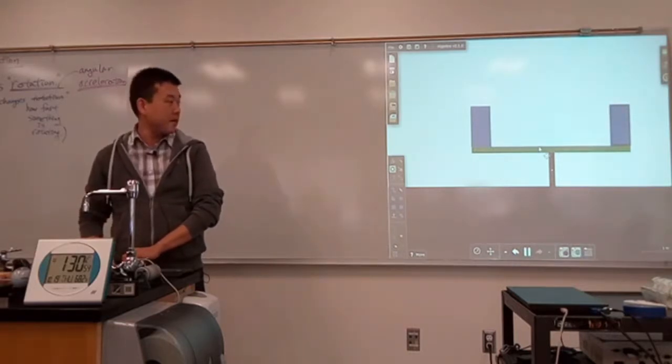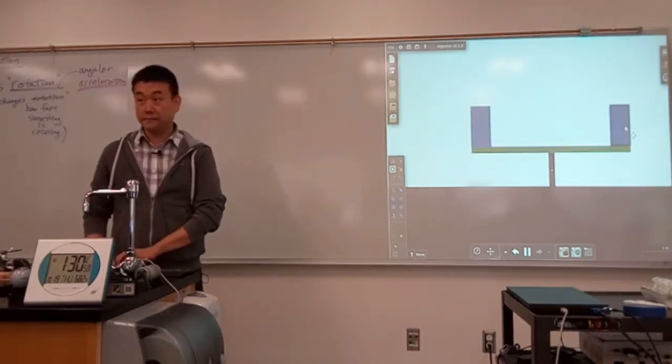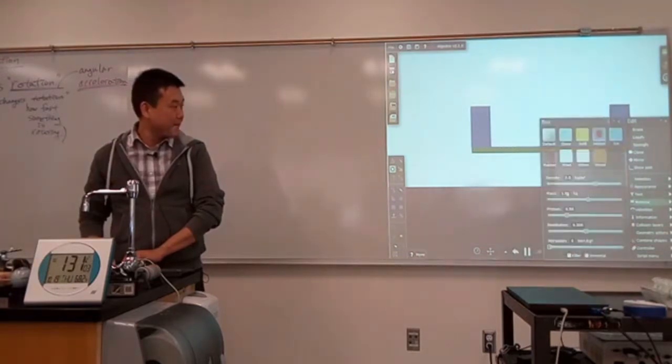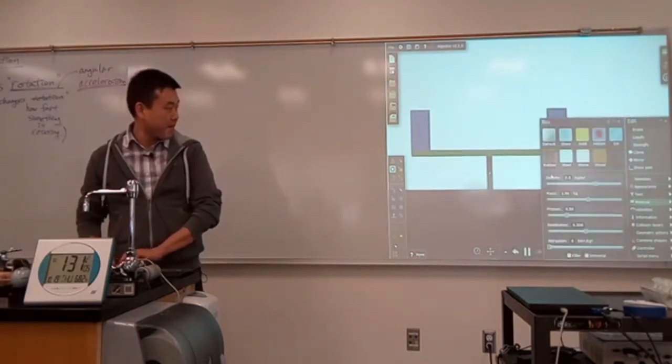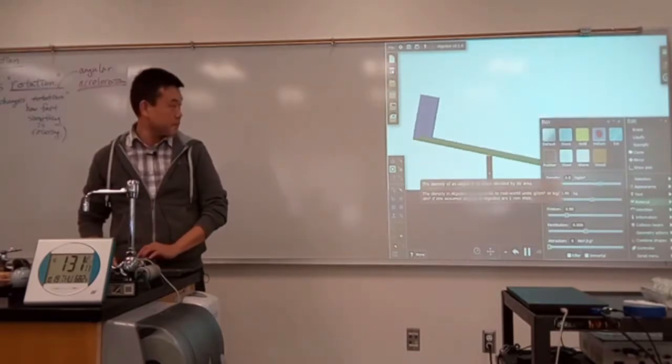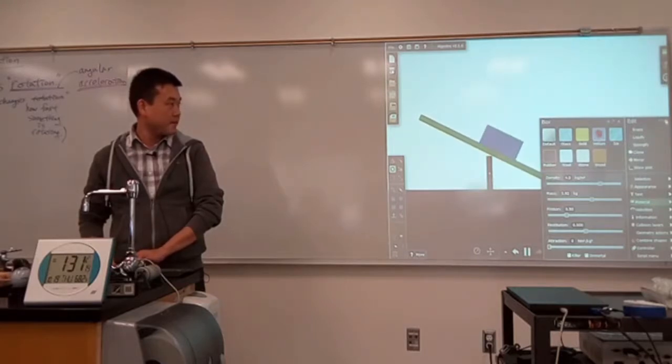Now imagine that the child on this end is twice as heavy. You don't have to imagine, I can make it. Let me make his density twice as much. So his density will be four times. It doesn't balance anymore.